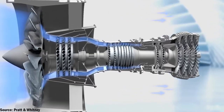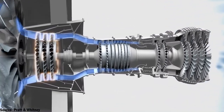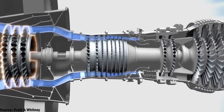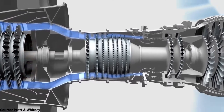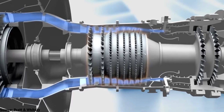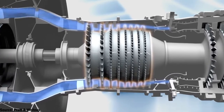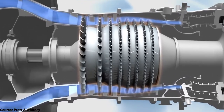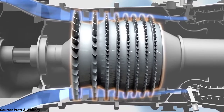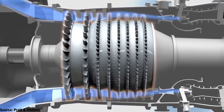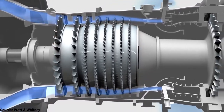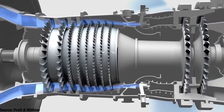From there, the remaining portion of the air that wasn't bypassed is then diverted into what's known as a compressor. A compressor, as you may have guessed, compresses air. The compressor stage consists of a series of narrowing fans that squeeze the air, preparing it for the next stage.